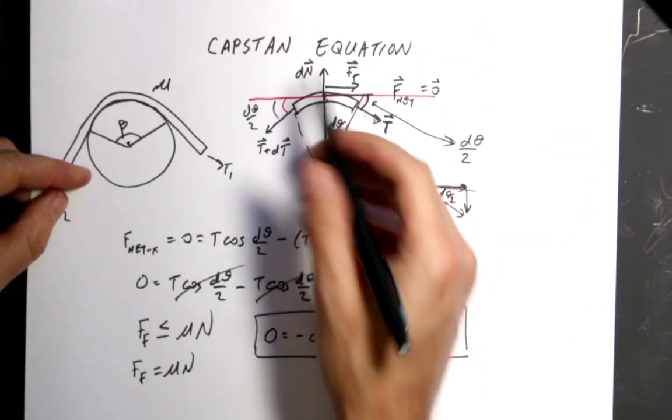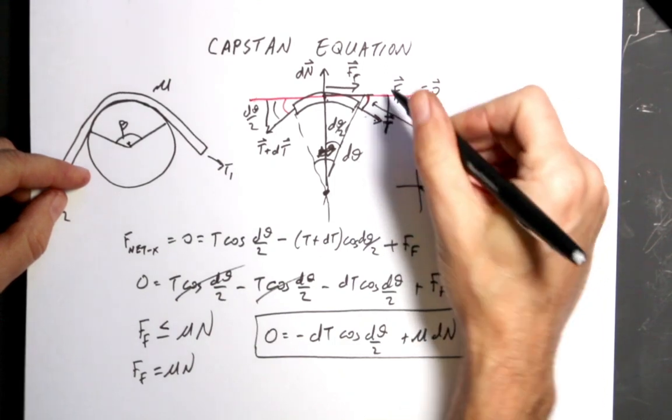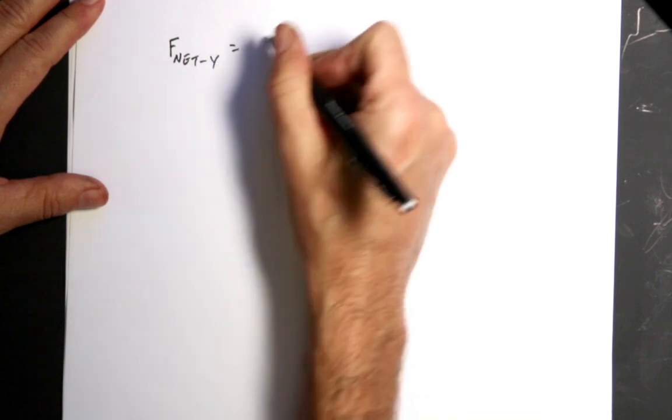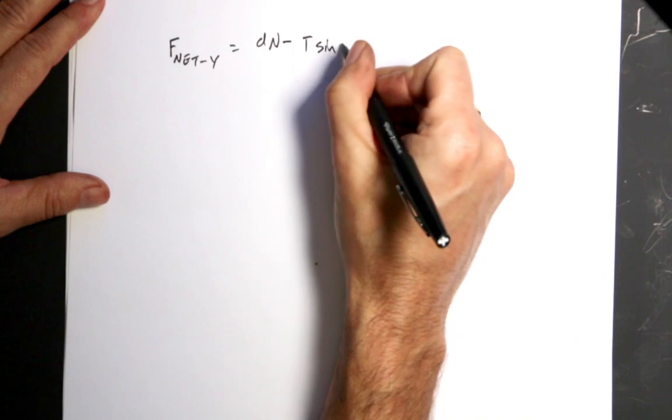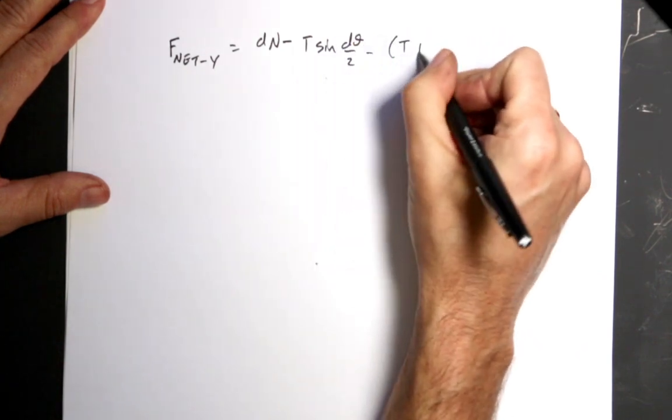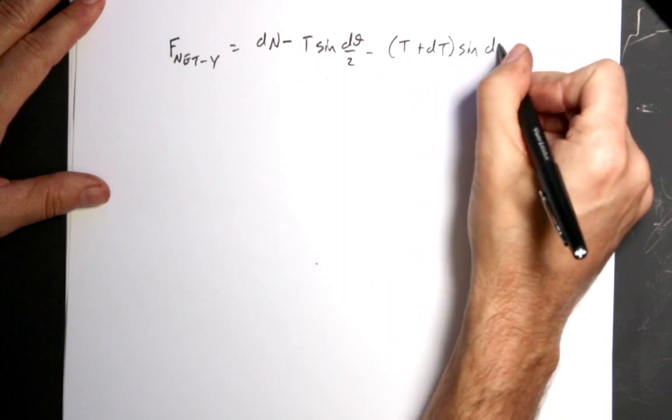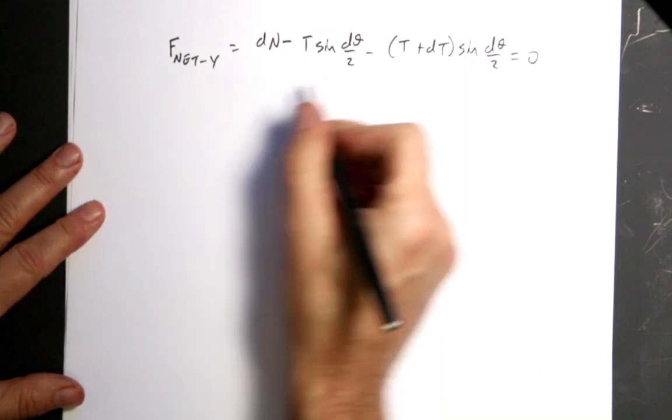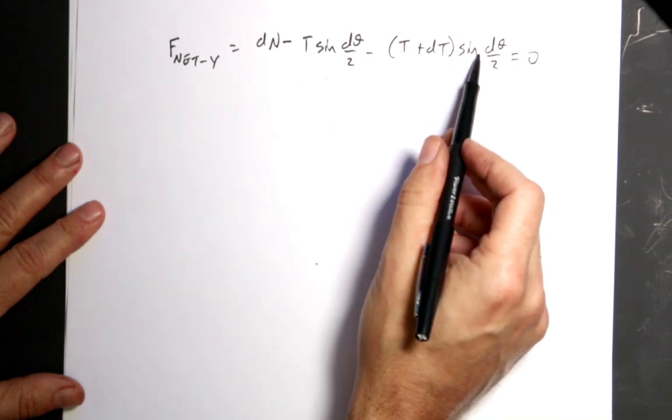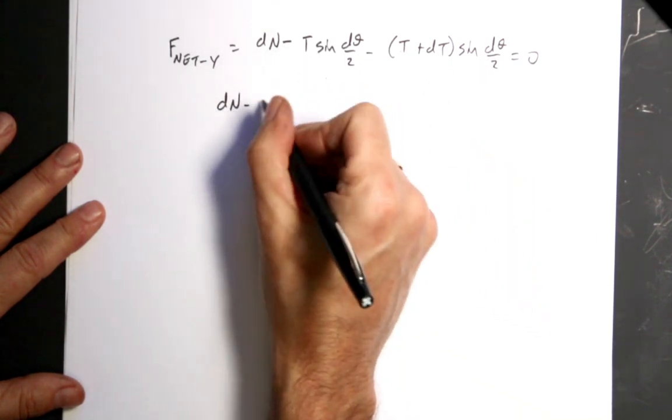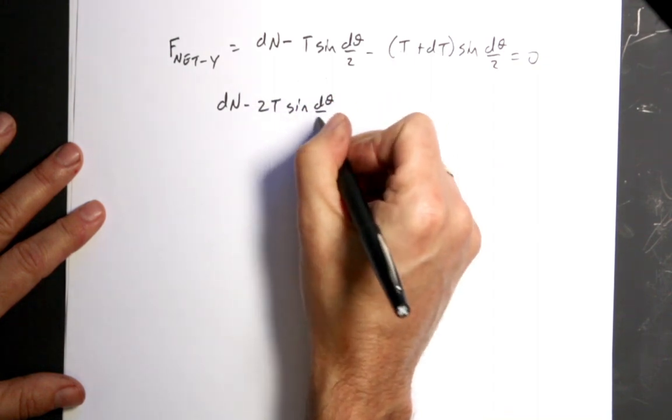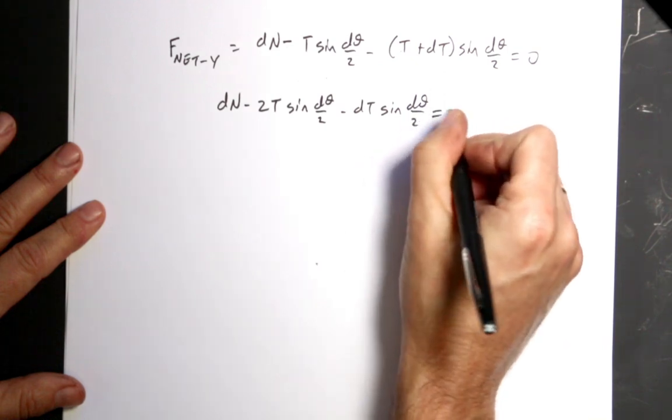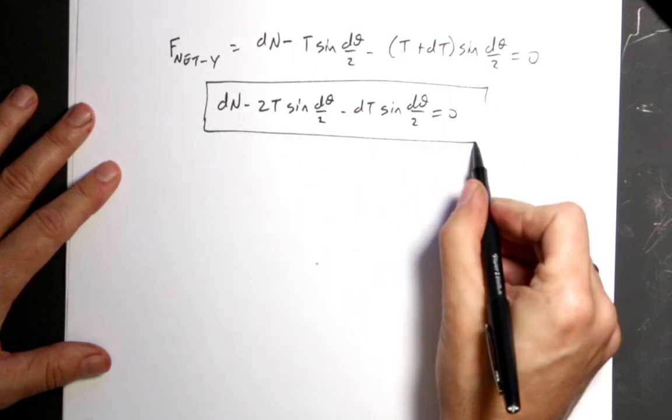In the Y direction, I'm going to switch to another page because I know I'm going to run out of room. And it's better to run out of room. Actually, so let's just think right here. I'm going to get this Y component of the tension, this Y component of the tension, and then the normal force. So I'm going to say F net Y is going to be DN minus T sine of D theta over 2 minus T plus DT sine D theta over 2 equals 0. Is this pen going bad? No, it's okay. Just I think the color is bad. So let's write this. I have negative T sine theta D over 2 minus T sine theta. So those two add together so I get two of them. So I get DN minus 2T sine D theta over 2. And then I have a minus DT sine D theta over 2 equals 0. So that's the other equation.